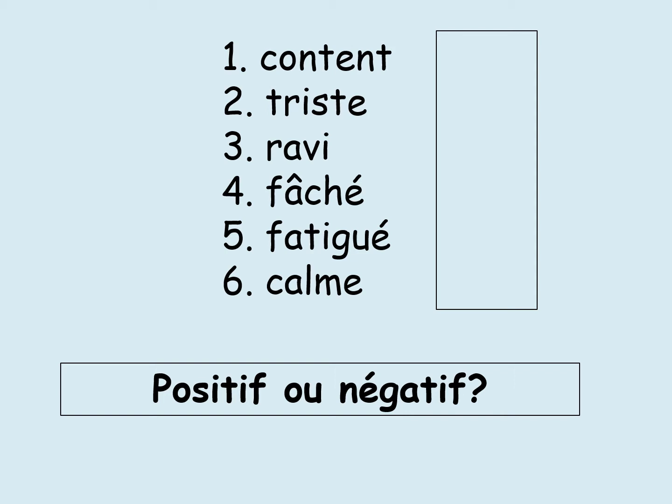Let's have a look at the six emotions that we can use to describe our emotions. What I want you to do is number one to six and tell me whether you think they are positive or negative, just by writing a P or an N. I'm going to give you about 20 seconds to get that done.